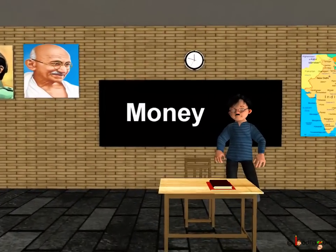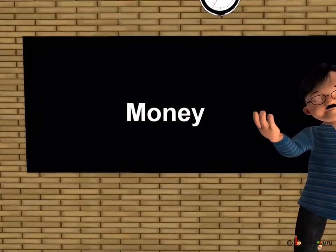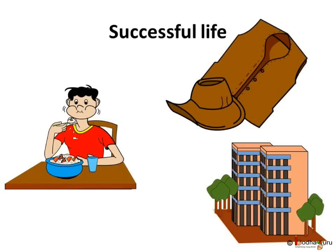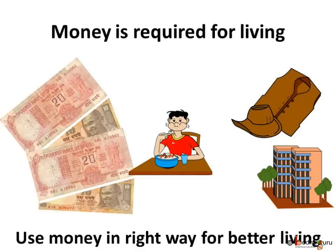Hello children, today we shall learn how to buy things with coins and paper notes. How nice it feels to live a life in which you get whatever you want, like delicious food, beautiful clothes and a great house to live in. You don't need to be a king to live like that. You just need to be successful in life and earn money. We need money for fulfilling all needs like food, cloth, shelter. So we must learn how to use it in the right way and how to save money also.